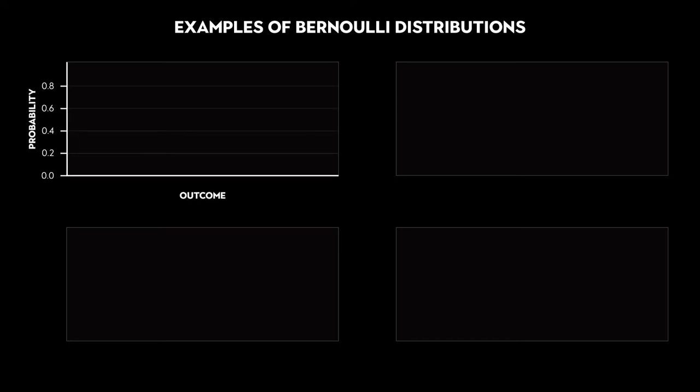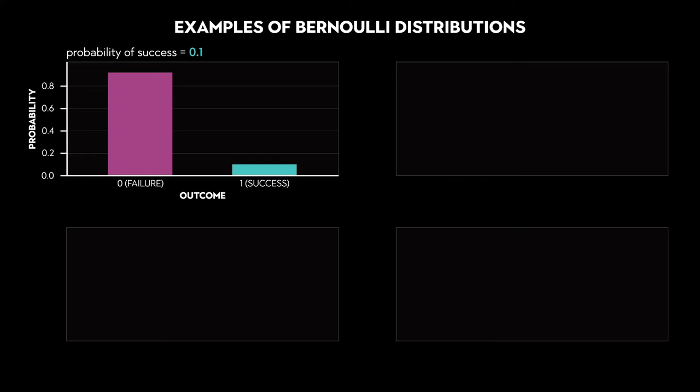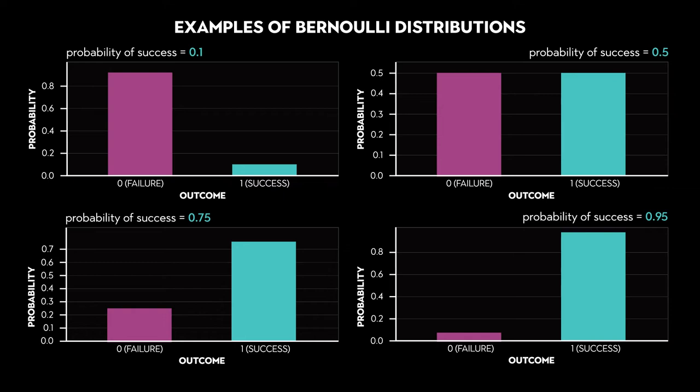But why does the binomial formula work that way? Before we get into that, let's look at what different Bernoulli distributions look like. When p, the probability of success, is equal to 0.1, we basically just have a histogram with two values. Our random variable can only be 0 for a failure or 1 for a success. We can do the same thing for three more values of p, as shown on screen. That's what the Bernoulli distribution looks like.